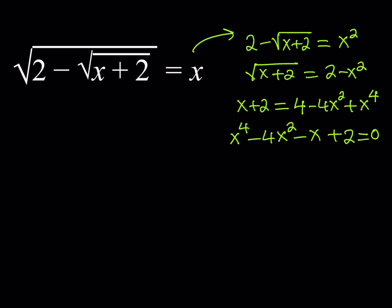This is a quartic equation, and you can look for rational solutions if they exist. The rational solutions need to be factors of 2. Since this is monic, you're not really expecting something like one-half or two-thirds, but rather integers. You can test them out, and if one works, you can divide by that as a polynomial and reduce the degree, keeping going until you get a quadratic. But here's the problem: after you find all these answers, you have to make sure they satisfy the original equation, because we squared both sides twice and that introduced extraneous solutions.